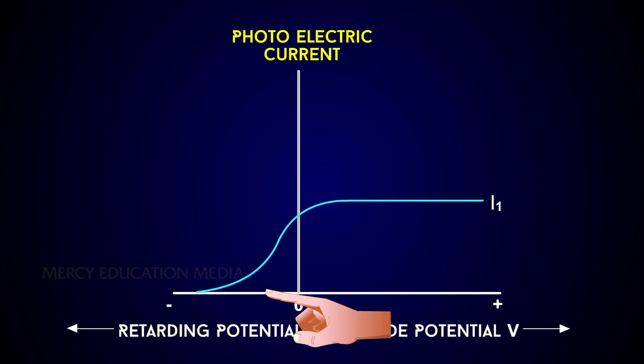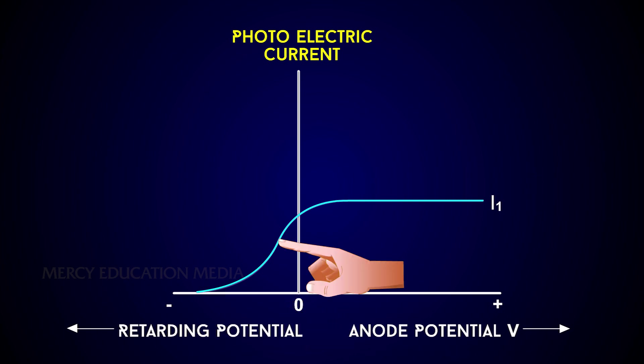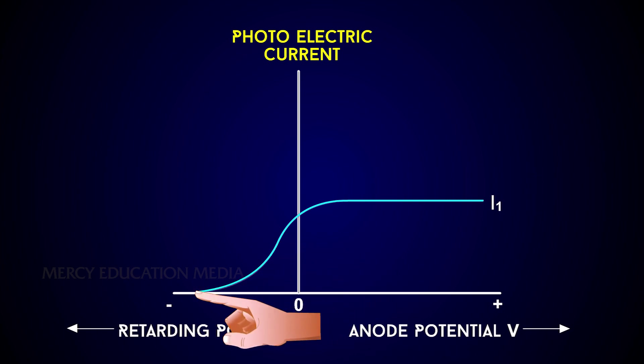This shows that the photoelectrons are emitted from the plate C with finite velocity. If the negative or retarding potential is further increased, the photocurrent decreases and finally becomes zero at a particular value.